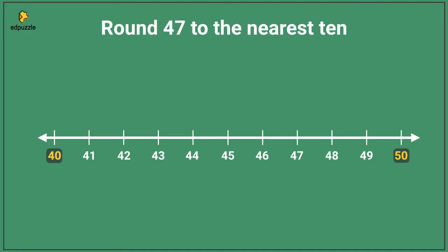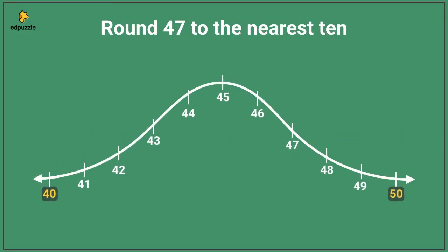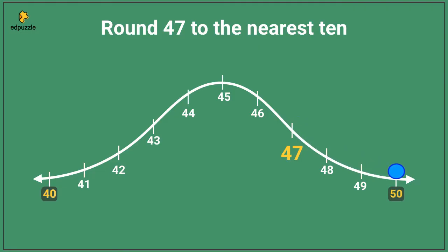Now I'm going to go one step further, and I'll think about this number line as a hill. This hill is helpful because I can imagine putting a ball on it. If the ball were right here, it would roll down to forty. But if the ball were up here, it would roll towards fifty. The number that we are looking at is forty-seven, so I will put my ball at forty-seven.